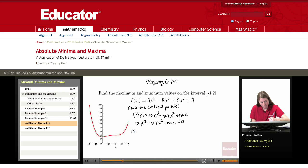I'm going to factor out a 12x and I'll be left with x squared minus 2x plus 1, and this product equals zero.